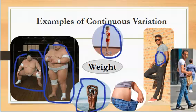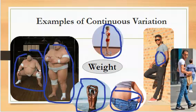We also have somebody who has successfully reduced their weight to the point that their trousers are no longer fitting them, and they're having to take up other trousers — just to show weight variation. And you have different gentlemen of different weights. This is a pure example of continuous variation in weight.